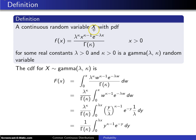So a continuous random variable X with probability density function f(x) equals λ^κ x^(κ-1) e^(-λx) divided by Γ(κ) for x greater than 0, for some real constants λ > 0 and κ > 0, is a gamma random variable with parameters λ and κ. And this λ has a special name. It is known as the scale parameter, and the κ in this particular distribution is a shape parameter.